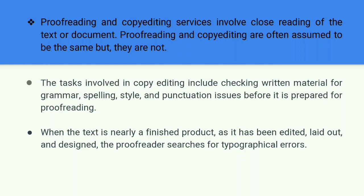Copy editing is a more in-depth process. This involves not just all the proofreading checks but also includes the revision of the text to improve its flow and structure. A proofreader mainly reads the copy of the document for checking consistency and layout of the information. The tasks involved in copy editing include checking written material for grammar, spelling, style, and punctuation issues before it is prepared for proofreading. A copy editor may also do a rewrite if necessary to fix problems with transitions, wordiness, or jargon, and to ensure the style fits the publication.